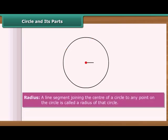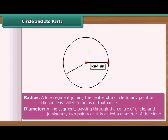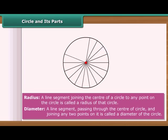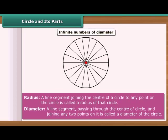A line segment joining the center of a circle to any point on the circle is called a radius of that circle. And a line segment passing through the center of circle and joining any two points on it is called a diameter of that circle. There can be infinite number of radius for a given circle. Similarly, there are infinite numbers of diameter for a circle.